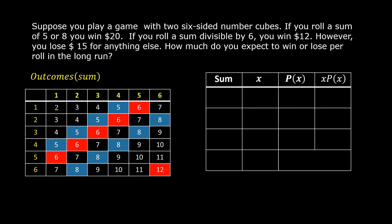Construct a table with 4 columns. In the first column, write the word sum. In the second column, write the lowercase letter x. In the third column, write p of x. In the fourth column, write x times p of x.